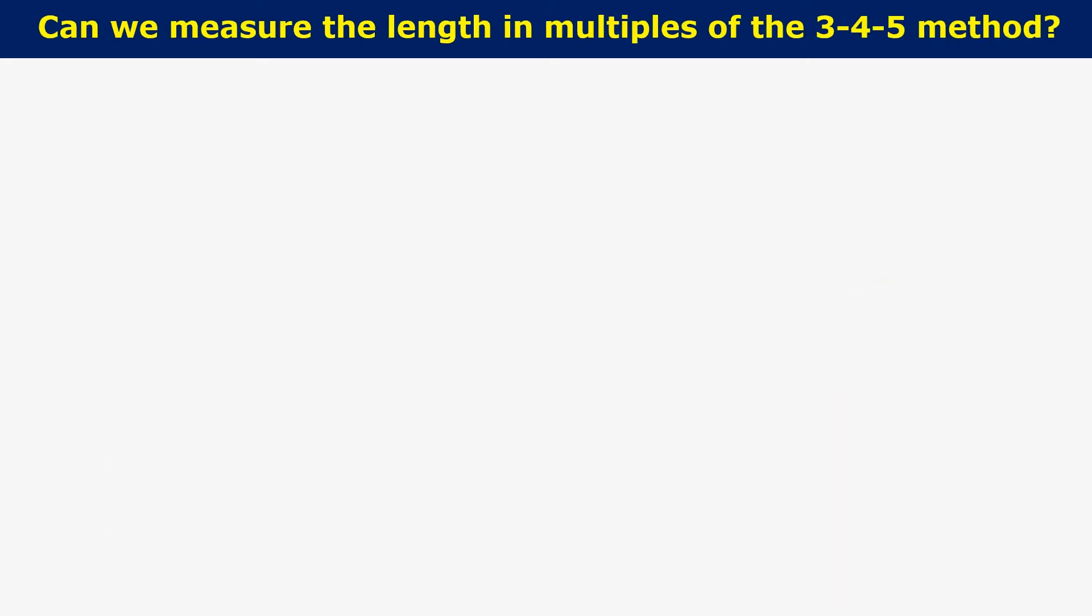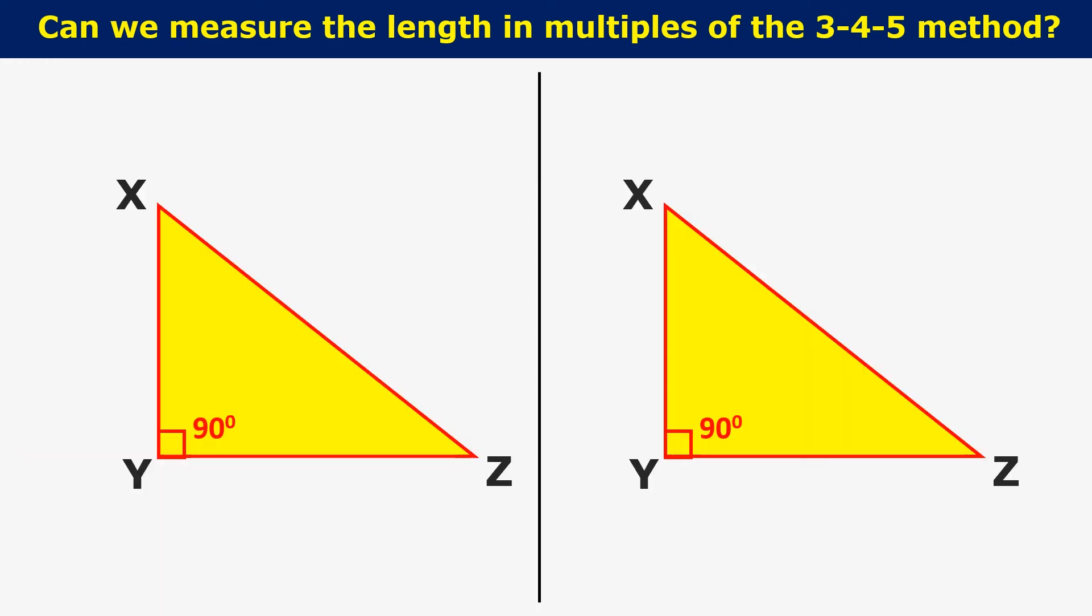So can we measure the length in multiples of 3, 4, 5 method? Yes. As you can observe the drawing, if you measure 6 feet and 8 feet along the sides, the hypotenuse should be measured for 10 feet length. Similarly, by multiplying 3-4-5 by 3, we can use the measurement 9 feet, 12 feet and 15 feet to carry out the layout.